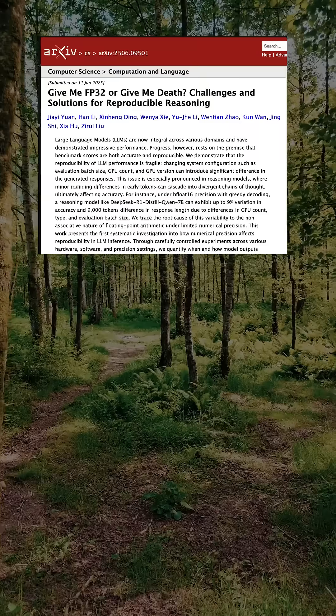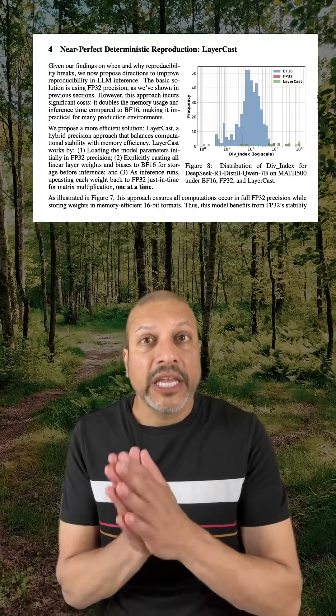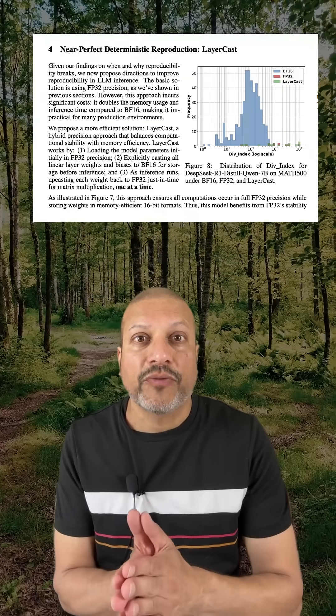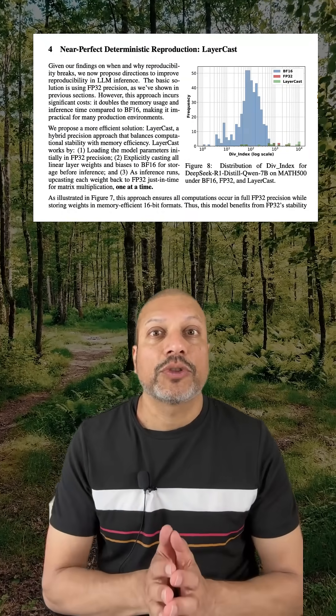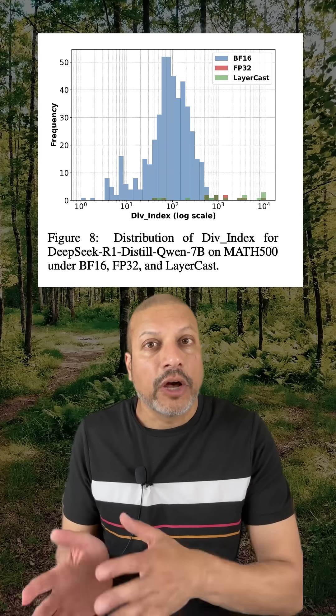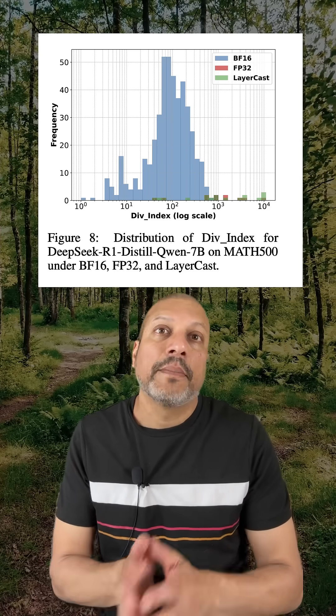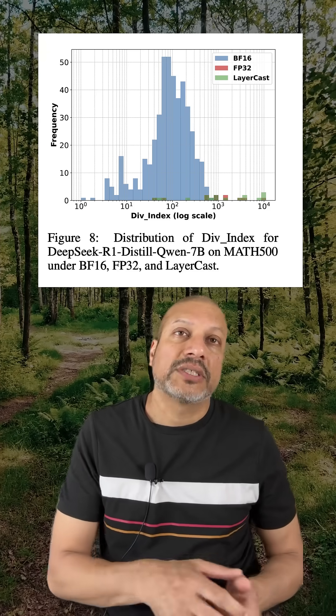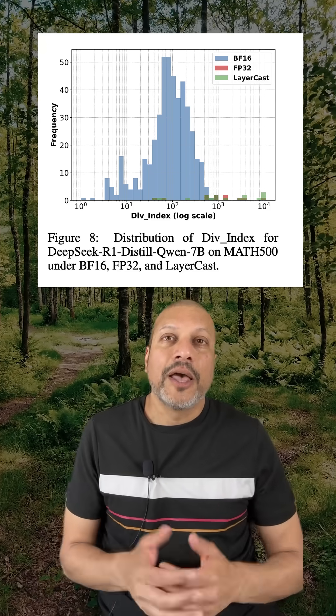In this paper, the authors propose a fix called LayerCast, where they keep the weights in the lower precision format but cast them to float32 for computation. This way you get the memory savings of reduced precision, but you get more consistent outputs.